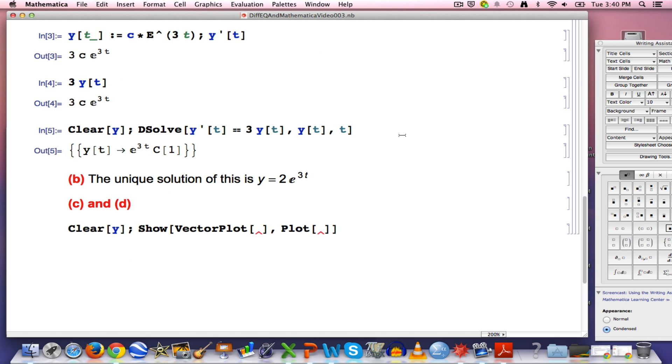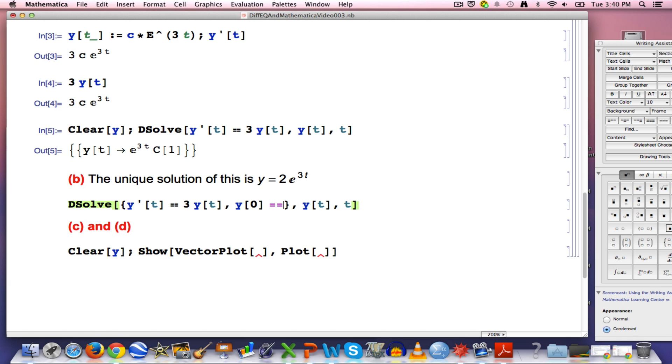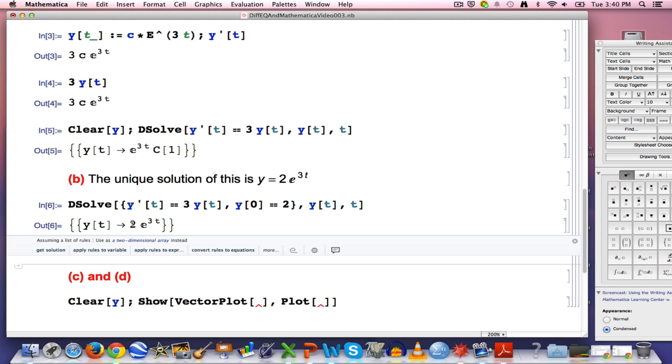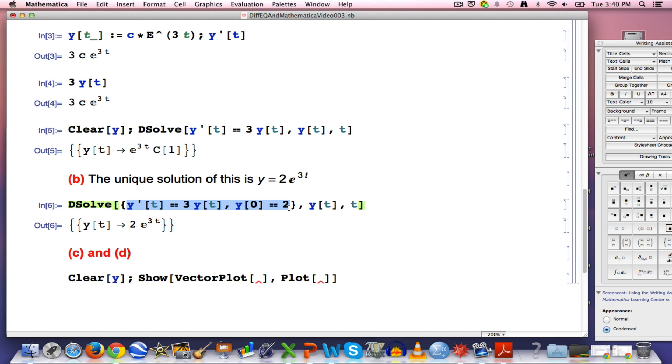Let's double check that on Mathematica as well. I can add my initial condition into DSolve by putting the differential equation and the initial condition in a list with a comma between the differential equation and the initial condition. Again, double equal signs are necessary. There we go, there is our unique solution to the initial value problem consisting of the differential equation and the initial condition.